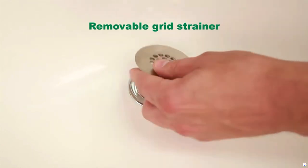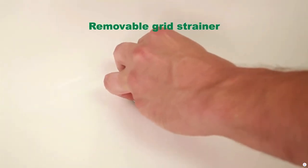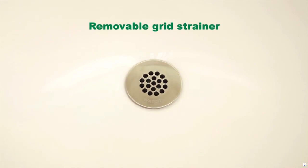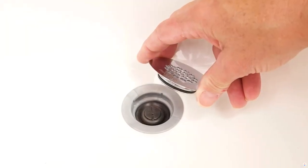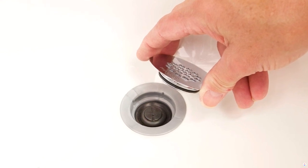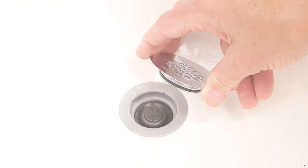The grid strainer is easily replaceable and can be purchased separately. This allows the sink user to easily replace a corroded grid strainer or update the grid strainer finish without removing the lav drain.